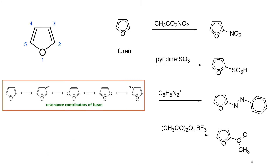Now about the chemical reactions of furan. As furan is an aromatic compound, like other aromatic compounds it undergoes electrophilic substitution reactions. From the resonance contributors, we already saw that positions 2, 3, 4, and 5 become electron rich due to delocalization. That is why an electrophile can easily attack any of these four positions.